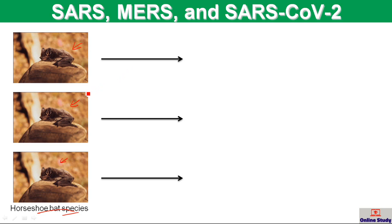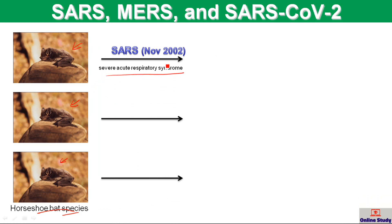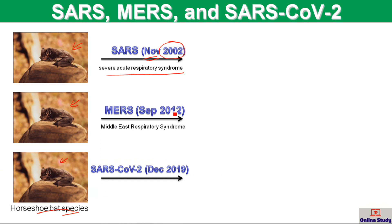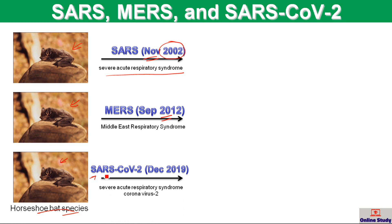For SARS-CoV-2 and its predecessors: the first one is SARS, which is called Severe Acute Respiratory Syndrome, discovered in November 2002 in China. The second one was MERS, which is called Middle East Respiratory Syndrome, discovered in September 2012. And the latest one, SARS-CoV-2, was discovered in December 2019.